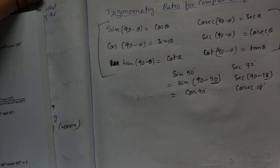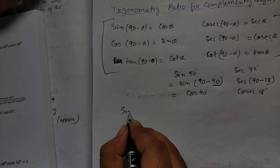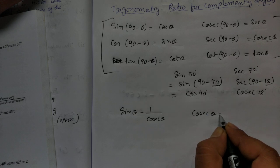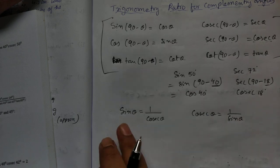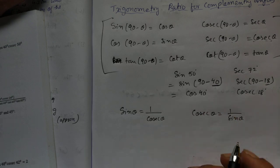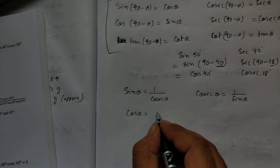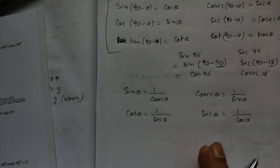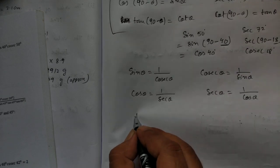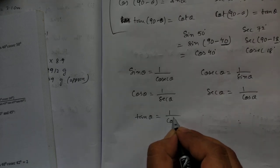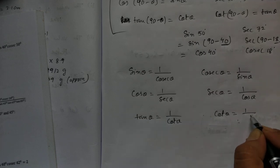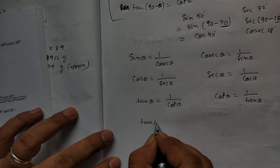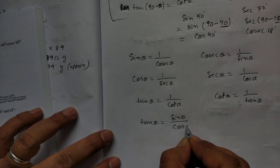Apart from the six complementary angle formulas, you also need to know the reciprocal formulas. sin θ is the reciprocal of cosec θ, so sin θ = 1/cosec θ and cosec θ = 1/sin θ. Similarly, cos θ is the reciprocal of sec θ. Also, tan θ is the reciprocal of cot θ. Remember also that tan θ = sin θ / cos θ.